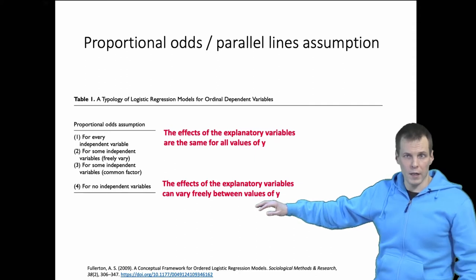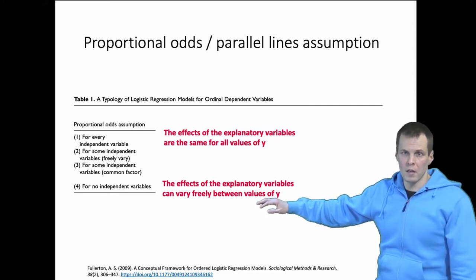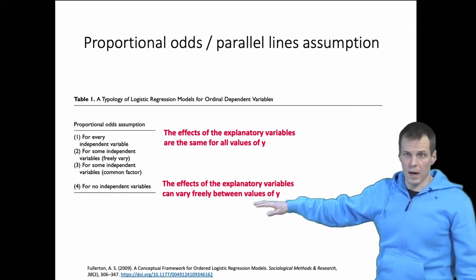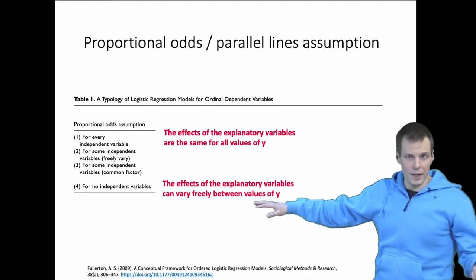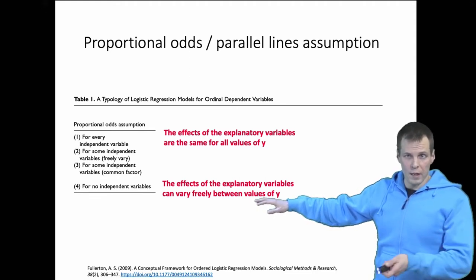So the choice between living in Finland to living in Sweden is explained by different variables in a different way than the choice between living in Finland versus living in Norway, for example.